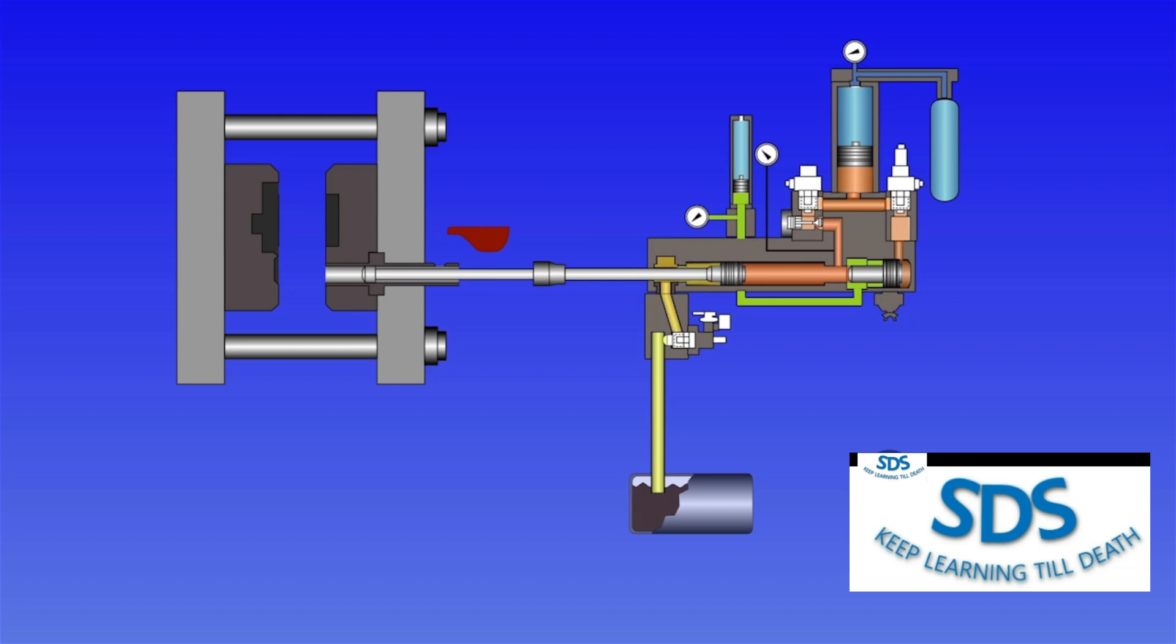The fact that the intensification piston is already moving at the end of stroke assists the final filling of the die by increasing the dynamic force applied to the metal. Once the injection piston has finally stopped moving, the intensification piston will continue to move forward, boosting the pressure in the injection cylinder to the desired value.